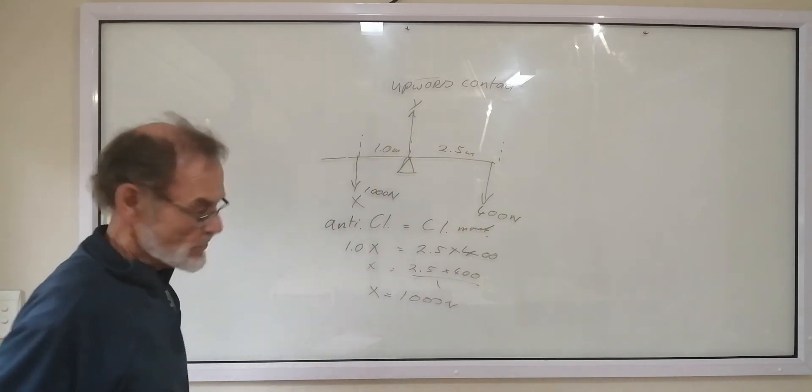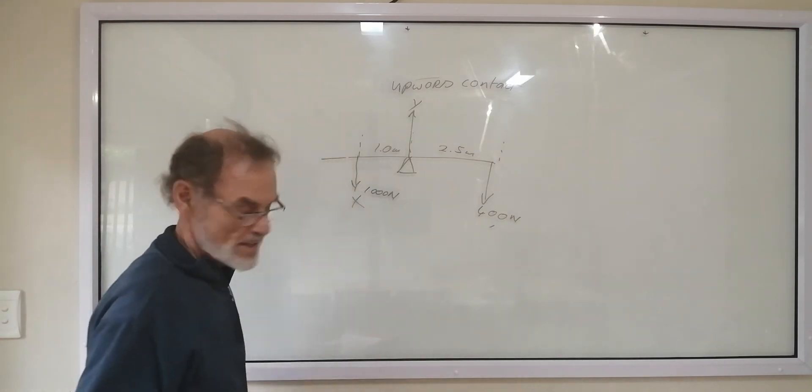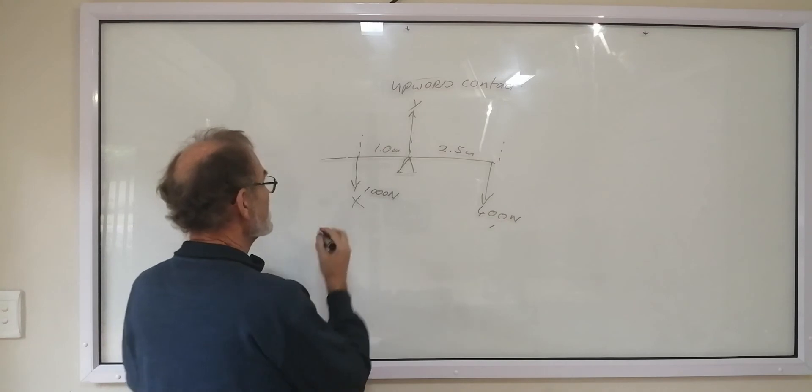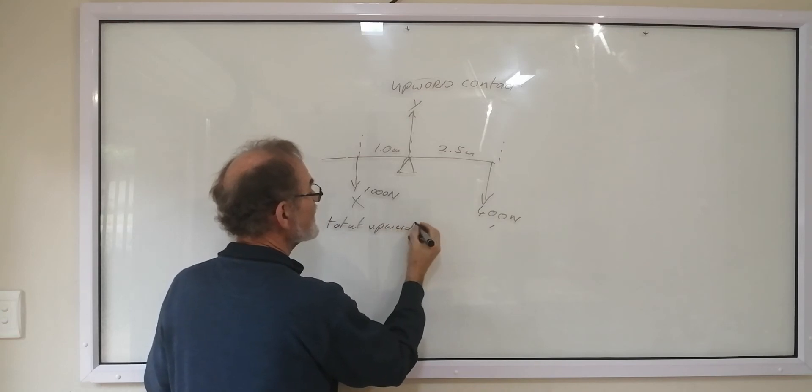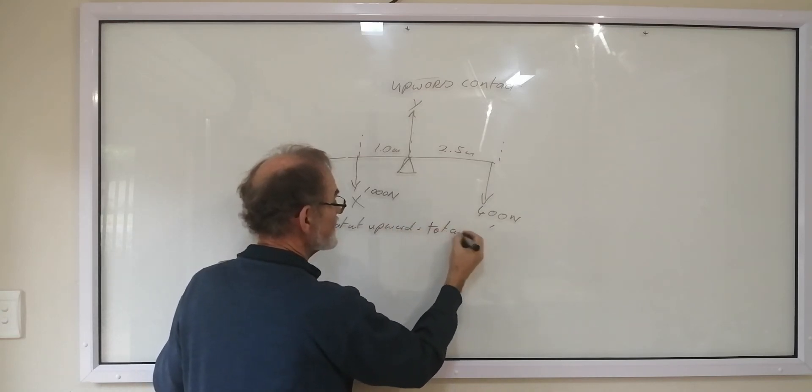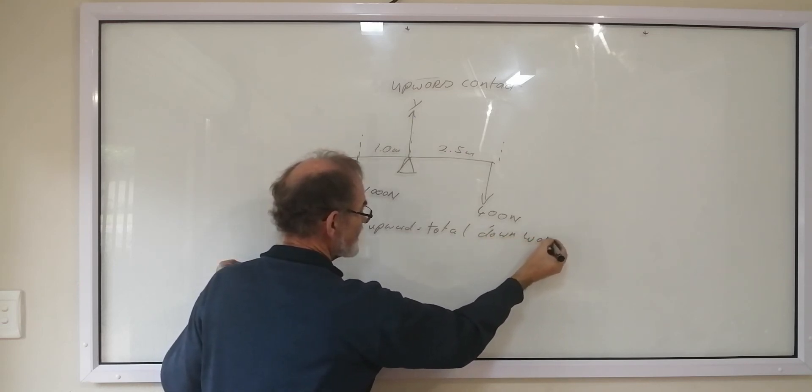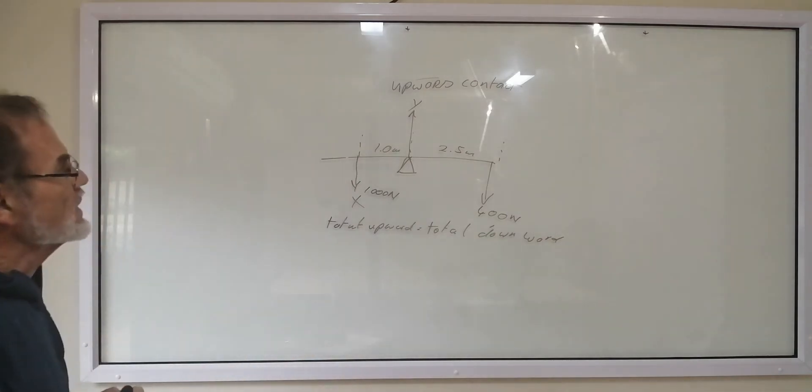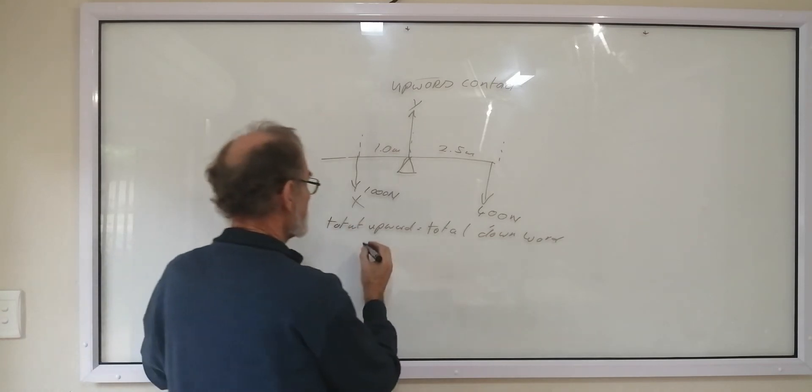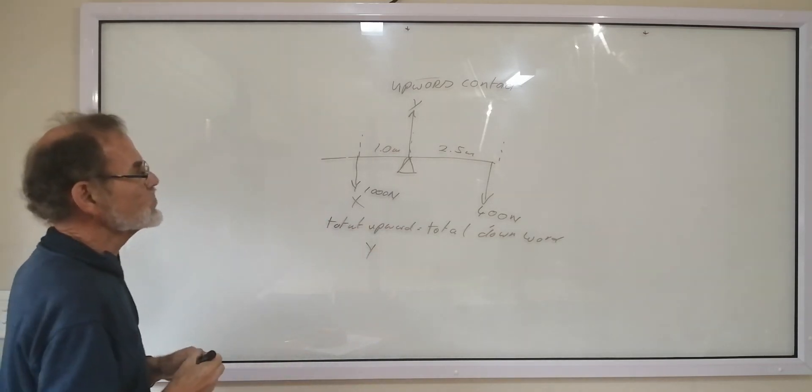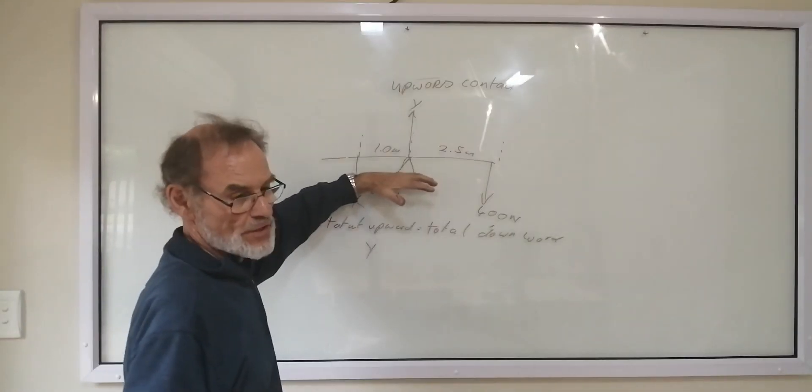So I'm going to rub out this now. And now I'm going to say that the total upward is equal to total downward. And what is the upward force? There's only one force upward. It's Y. And Y is the force that stops this whole system from falling down.